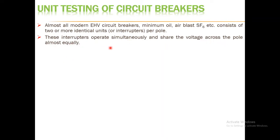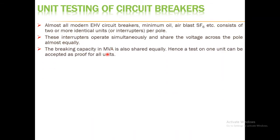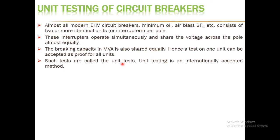The breaking capacity, expressed in MVA, is shared equally by all interrupters. So the test on one unit can be accepted as proof for all units. During unit testing, only one unit is put under test while the others are isolated — meaning grounded. The test is performed only on one pole and based on that result the others can be accepted. Such tests are called unit tests, and unit testing is an internationally accepted method.